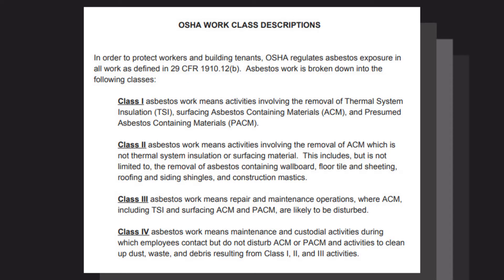When we look at Class 4 — or in Canada, Type 1 work — we're looking at removing ceiling tiles that are 7.5 square meters or less, installing or removing non-friable asbestos materials, and tiles that are not going to be broken, cut, or drilled. This covers all types of contained asbestos work and removing less than one square meter of drywall where joint filling compounds contain asbestos — very minimal work.